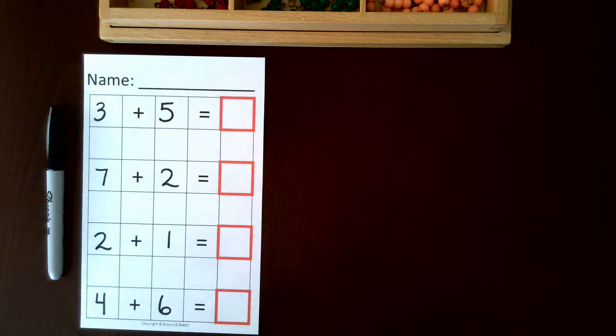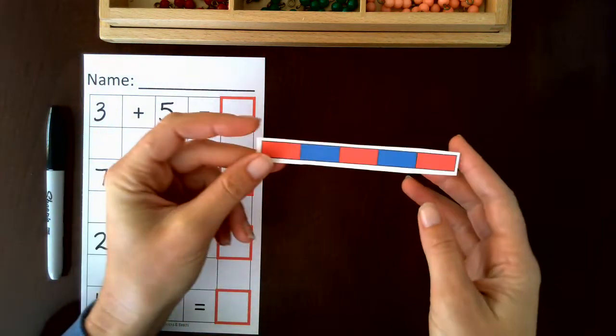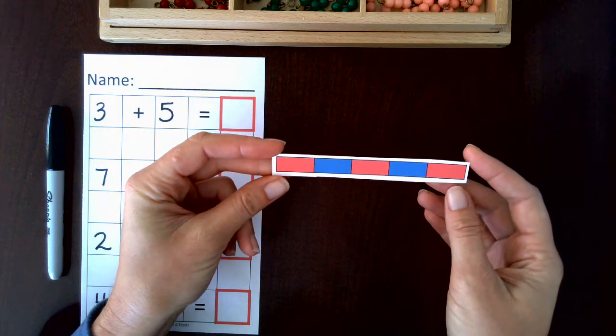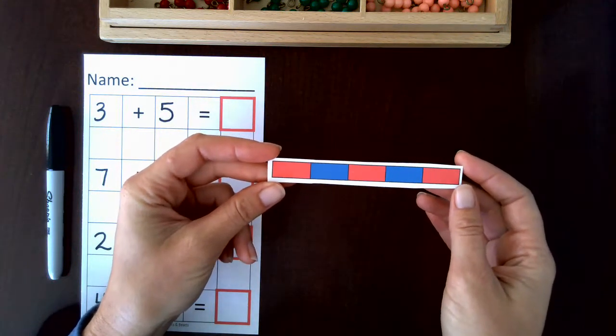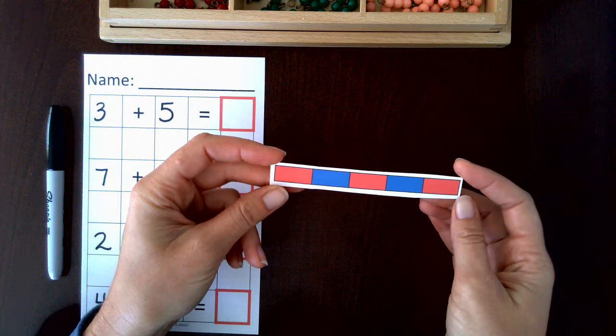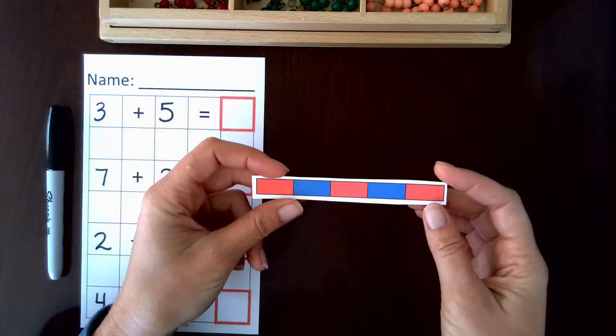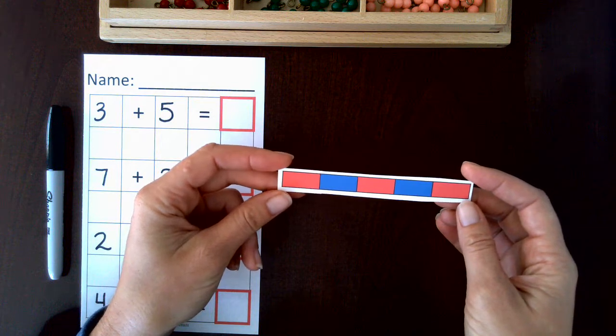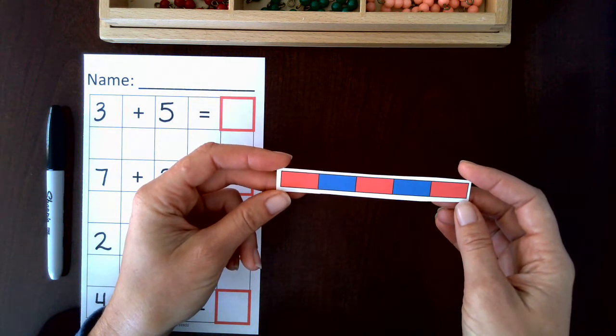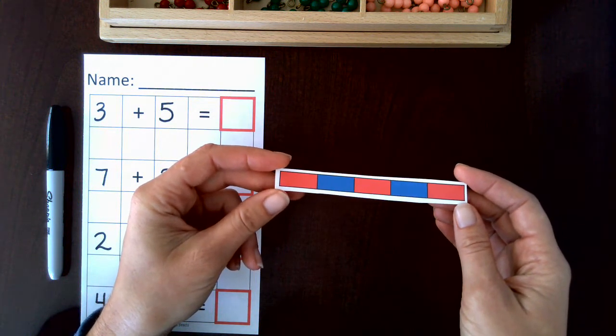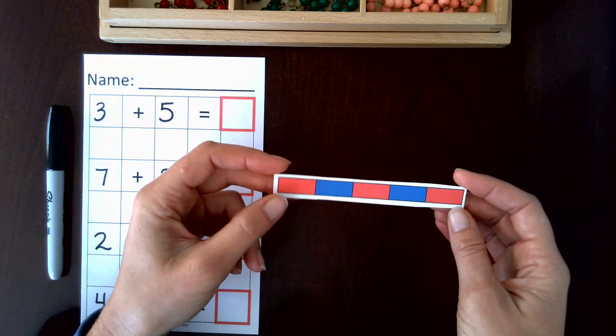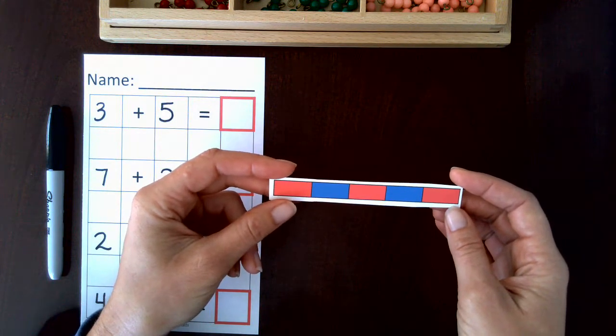This is the second lesson in learning the addition tables. Previously, the children used the red and blue wooden number rods to make combinations of ten, and that was an introduction to adding. They can also repeat that lesson making combinations of nine, eight, seven, six, and so on. At that level, answers don't need to be recorded.